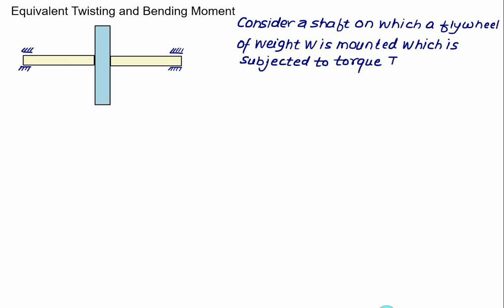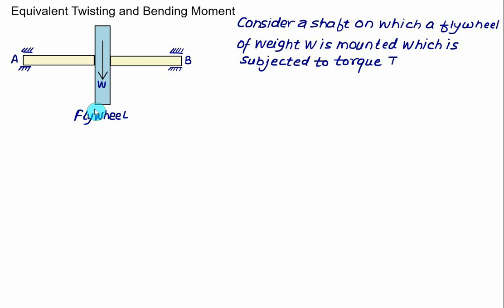We will develop here one more concept: the equivalent twisting moment and the equivalent bending moment. For this we consider a solid shaft with a flywheel of weight W. The shaft is supported by pins at two bearings A and B, so we model this as simply supported. In addition, the flywheel is subjected to a torque T, and for simplicity we assume the flywheel is mounted equidistant from A and B, so each length equals L.